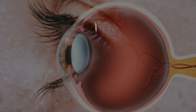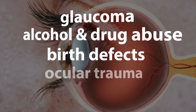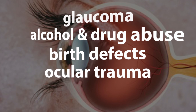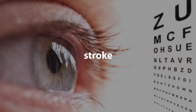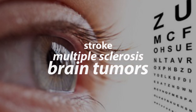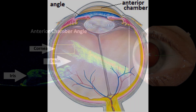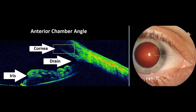Many conditions can affect the optic nerve, including glaucoma, alcohol and substance abuse, birth defects, and trauma, as well as many neurological conditions such as strokes, multiple sclerosis, or even brain tumors. As for the anterior chamber angle, this structure sits at the front of the eye and is located where the white part of our eye meets the colored part. This is where fluid inside the eye drains. Our eye pressure is highly dependent on how open or closed this drain structure is, and this is dependent on a variety of factors.